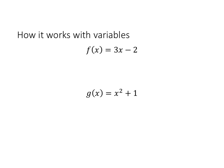Now let's see some examples of how function notation works with variables. Here we have two examples. In the first one, we would read this as f of x equals 3x minus 2. Now let's think for a second what that means. If we give this function the input x, it produces the output 3x minus 2.